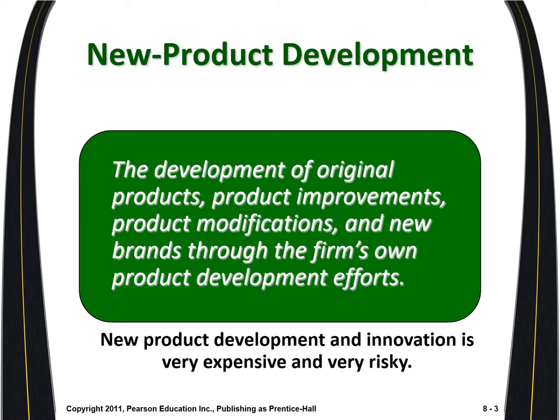There are many examples in history where companies came out with new, superior products, but people didn't want to use them. The most famous example is VHS versus Betamax for video cassettes. The VHS cassette became very common, but it was actually an inferior format to the Betamax. VHS became the standard because more people had VHS machines and wanted compatibility. Even though Betamax came out with a superior product, people did not want to use it.